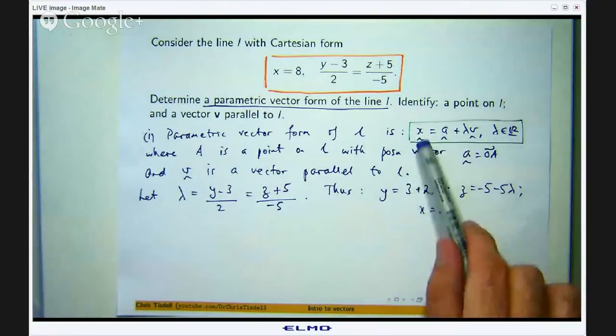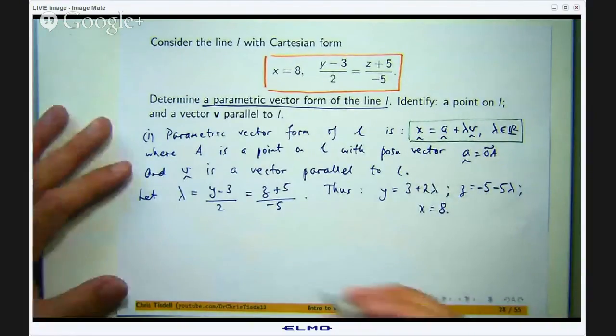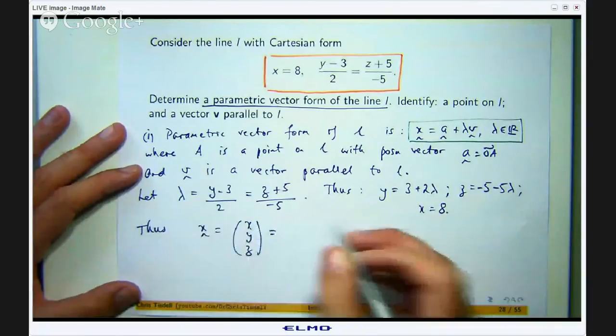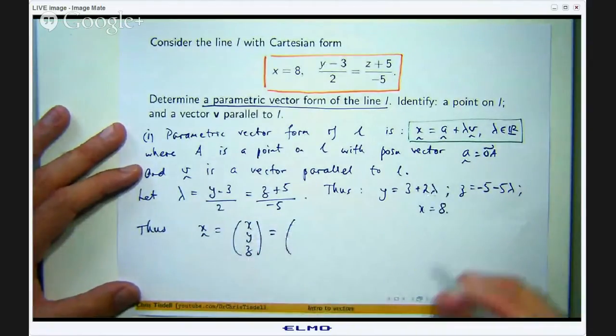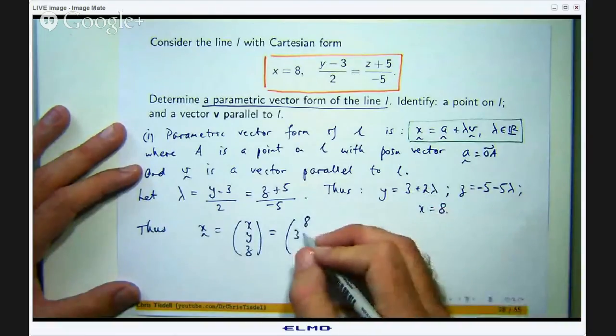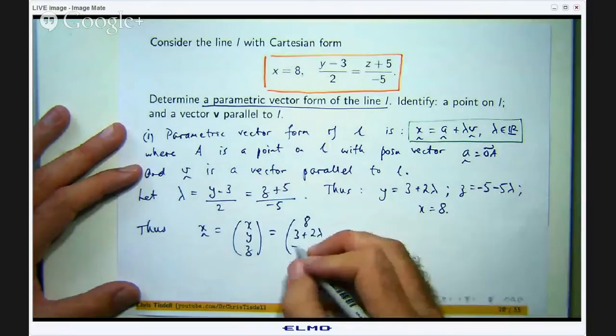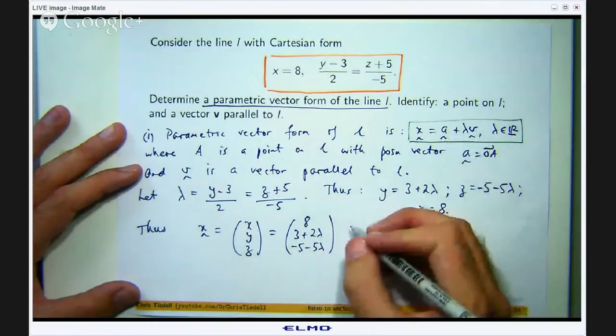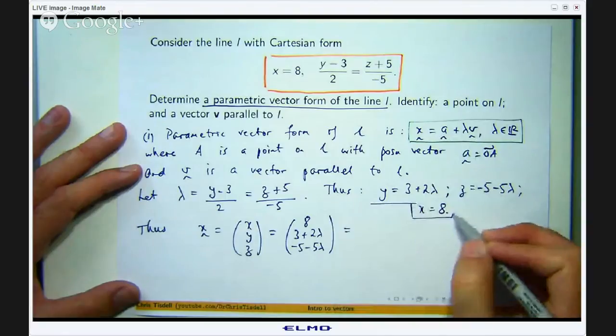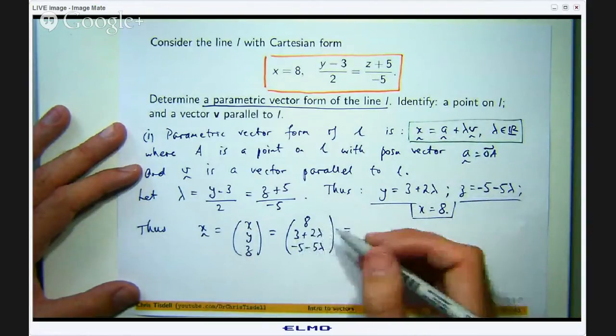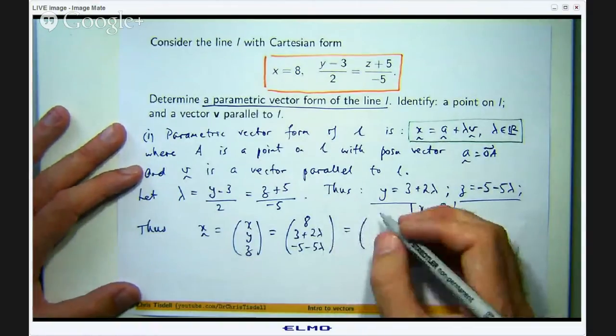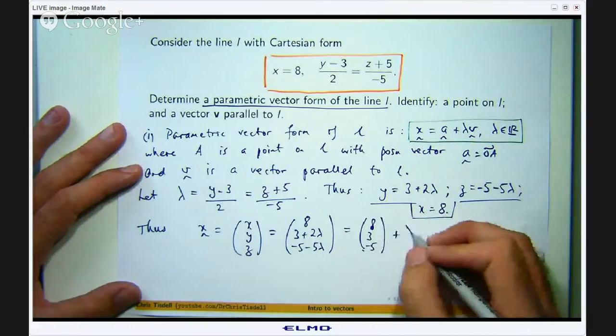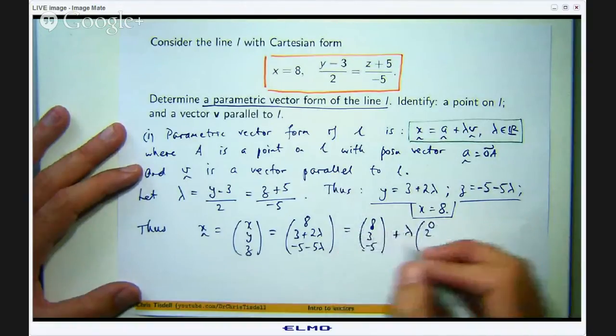And I have not touched this because x does not depend on this lambda. So x is always a constant. x is always equal to 8 in this case. So what I can do now is write x, y and z as a column vector and just write out these parts. So it is 8, 3 plus 2 lambda, and so on. So let us take out all the constants that are not multiplying through by lambda and I will have something like this. So 8, 3, –5 plus lambda times 0, 2, –5.